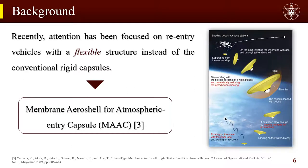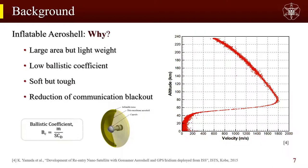Nowadays, attention has been focused on entry vehicles with flexible structures instead of conventional rigid capsules. The MACH — Membrane Aeroshell for Atmospheric Entry Capsule — is a project to develop a flexible re-entry capsule, which consists of a capsule, a flexible aeroshell, and a torus to maintain its shape. Its advantages include deceleration at high altitudes where the atmosphere is less dense, due to its large area and light weight, avoiding aerodynamic overheating, eliminating difficult parachute deployment, reducing communication blackout, and being foldable compactly when launched by a rocket.